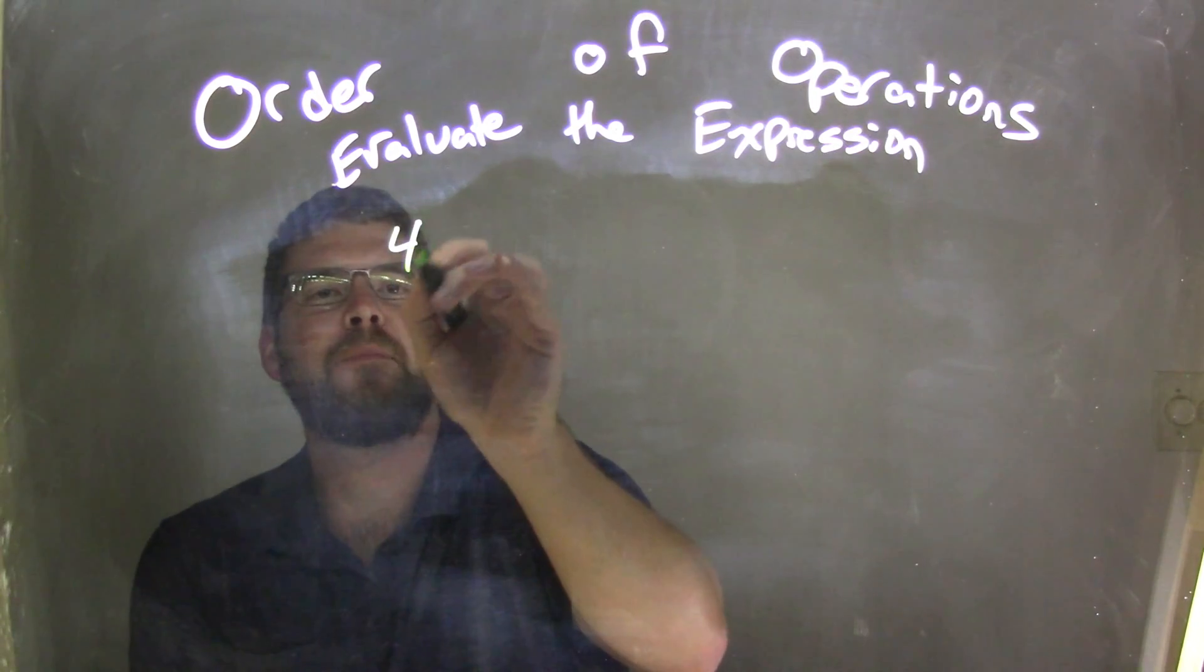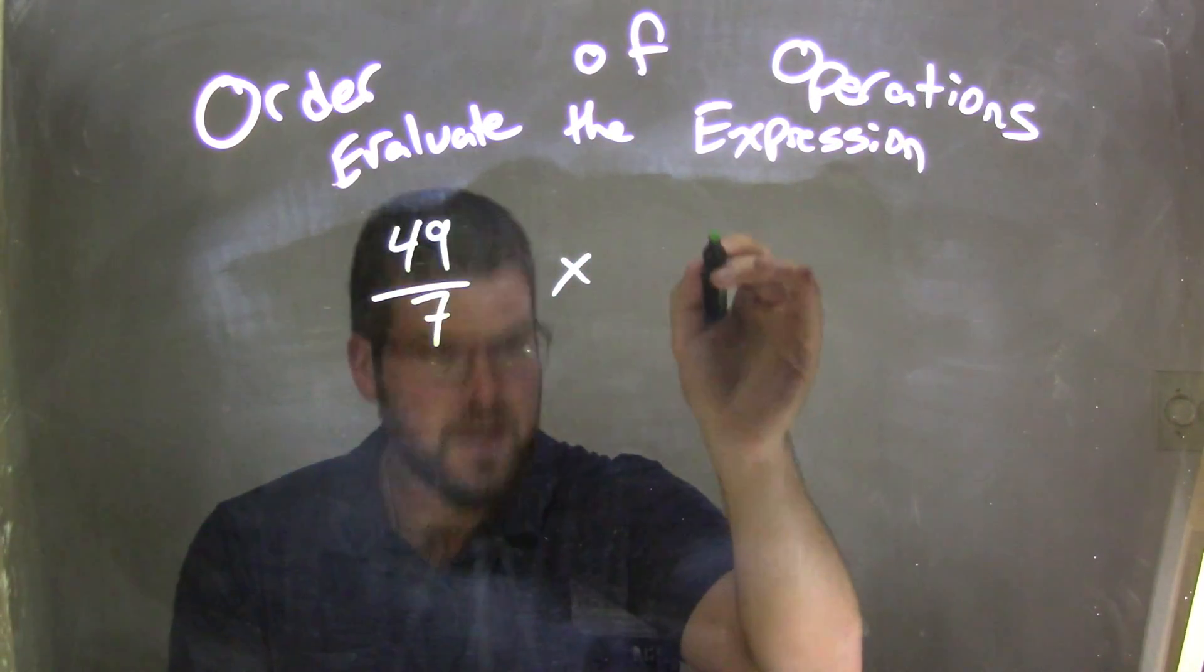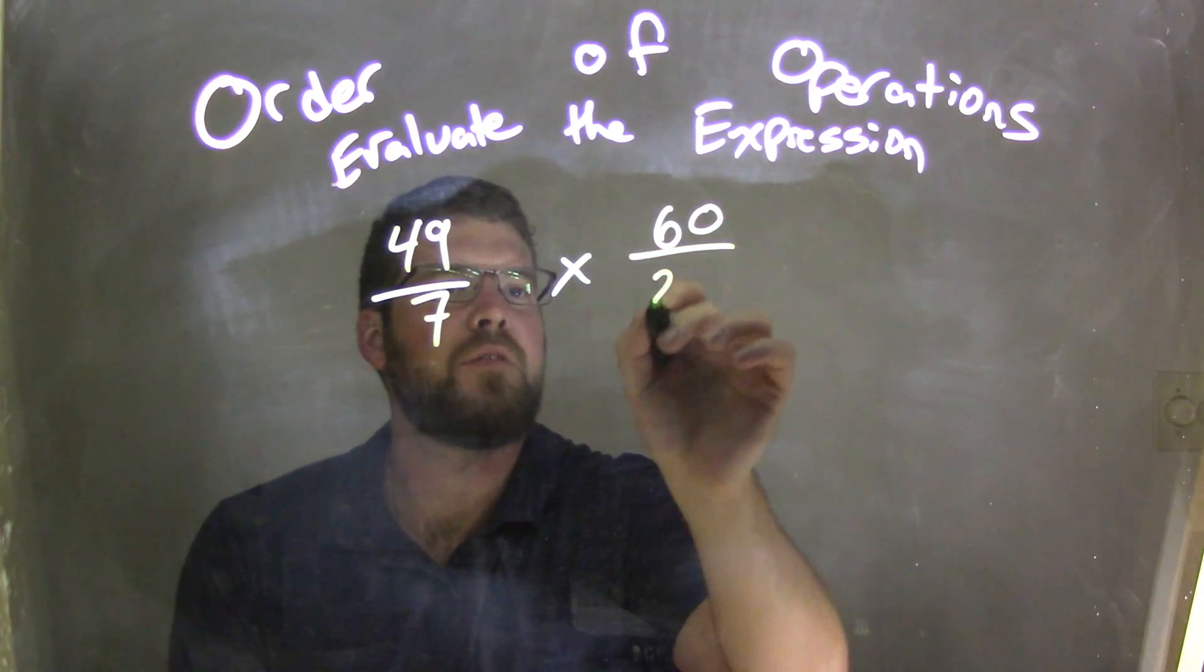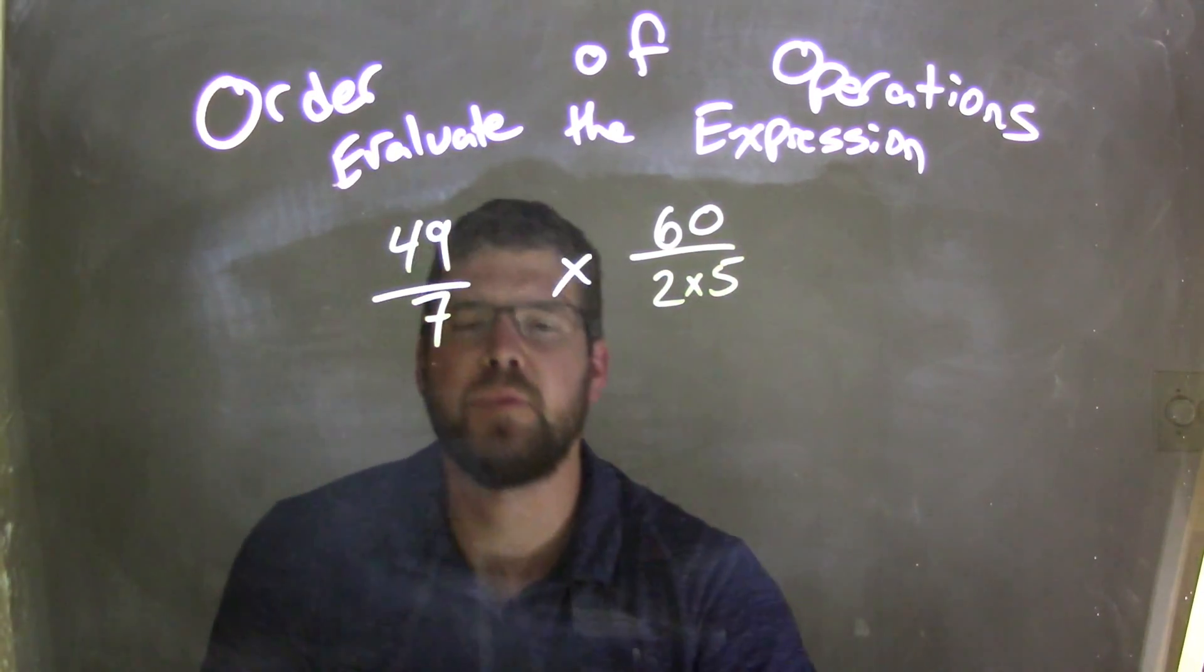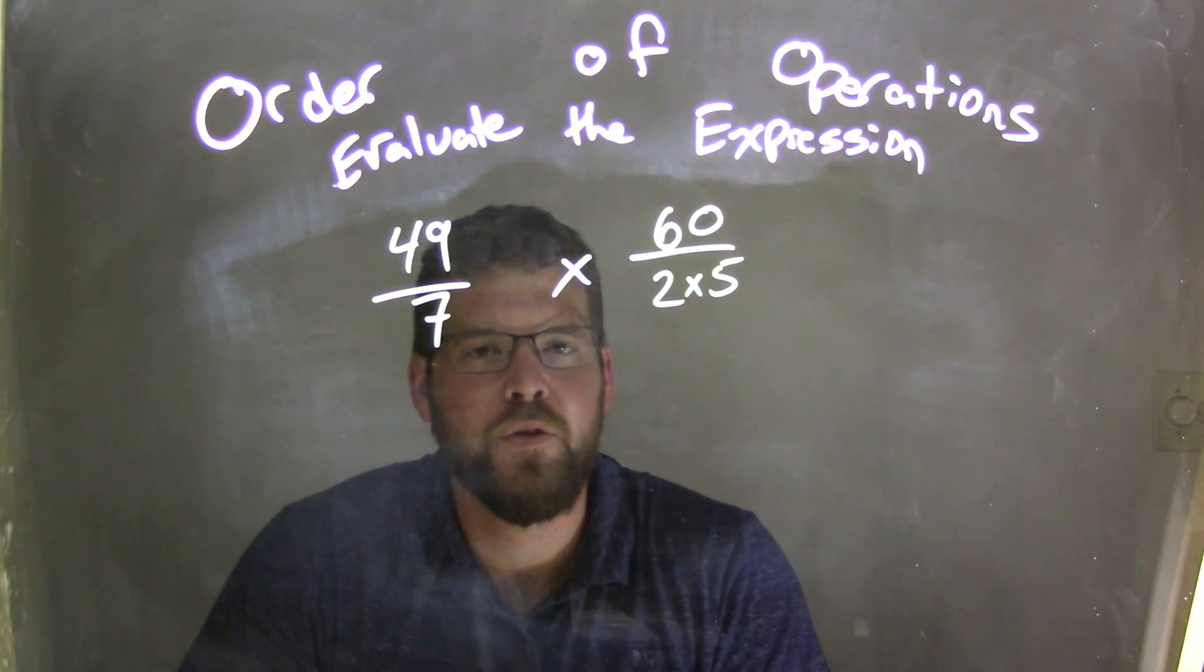So if I was given 49 over 7 times 60 over 2 times 5, okay? So 49 over 7 times 60 over 2 times 5.